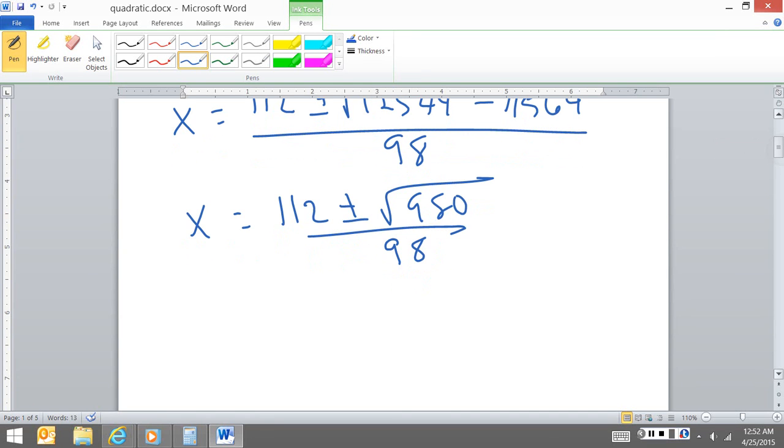So then we have to ask ourselves, can we take anything out? Can we simplify? At this point, there's nothing we can do. We don't have a term we're pulling out of each one of these. But I'm going to look at the 3 and go, what can I do? So I'm going to look at 980, and I'm going to go, I need to try to find a perfect square.